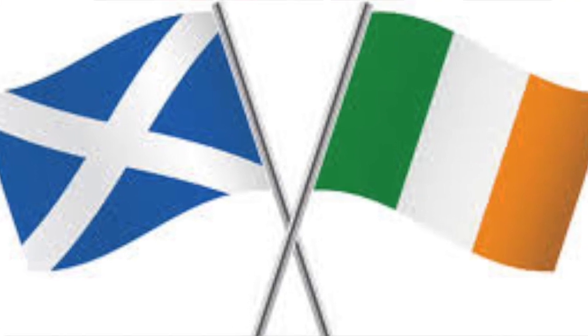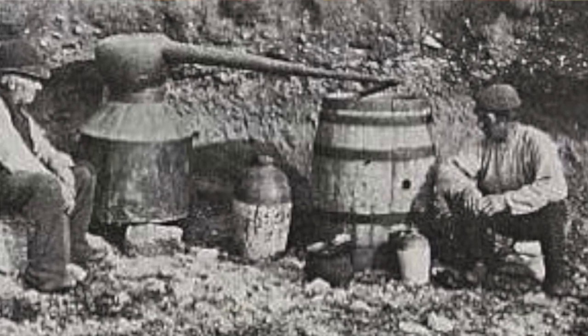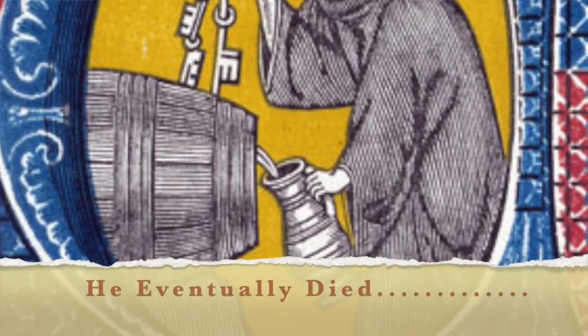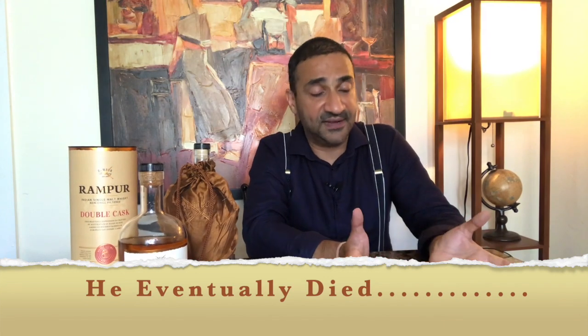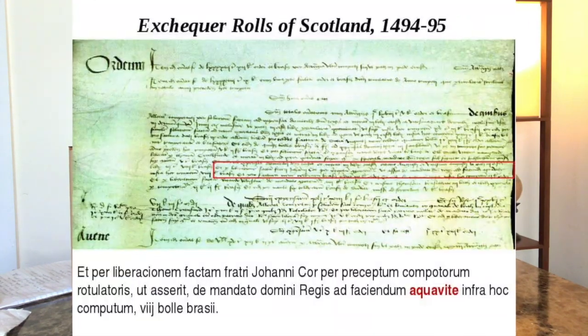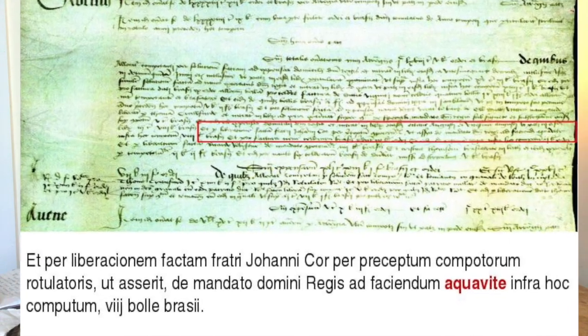Here are two historical facts for you to decide. The first mention historically is 1405 in Ireland — a reference to a lunatic who had too much alcohol and went crazy. A more serious mention comes in 1494 for Scotland's favor, where it says the king gave eight bowls of malt to a monk to make aqua vitae. That historical reference suggests Scotland is where whiskey started.